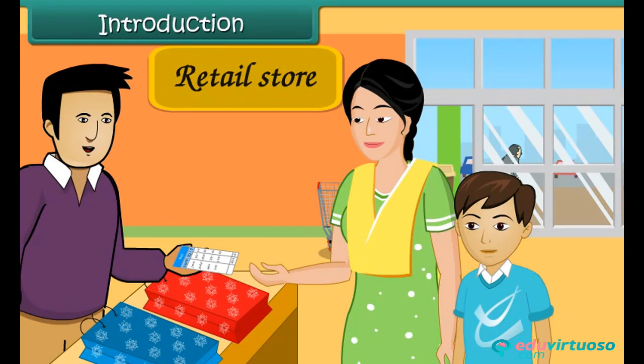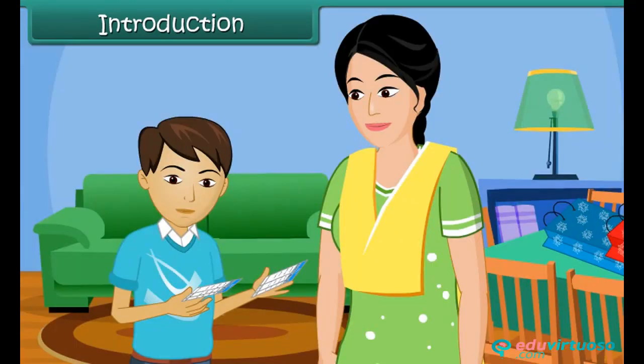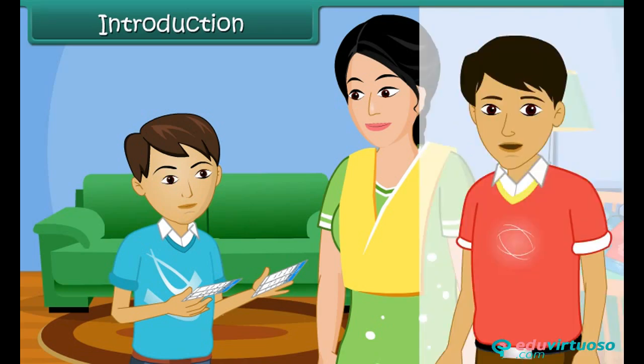Her mother bought some grocery items and the bill amounted to rupees 2,350. At home, he compared the total amount of the two bills. He told that his shirt's cost was more than all the grocery items. How was he able to tell?